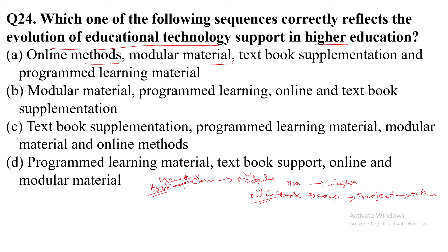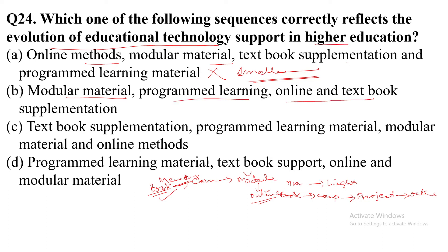First of all, Option A starts with online method — meaning small to big, starting from the beginning of the journey with online method first. But we have not read books first in that option, so Option A is not correct. Option B starts with modular material — a module is made of parts. Then program learning, then online, then textbook supplement.